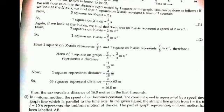Since 1 square represents a distance of 4/15 meters, therefore 63 squares represents a distance equal to (4/15) × 63, which gives us 16.8 meters. Thus the car travels a distance of 16.8 meters in the first 4 seconds.